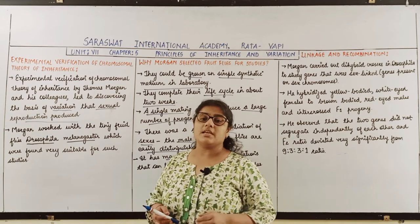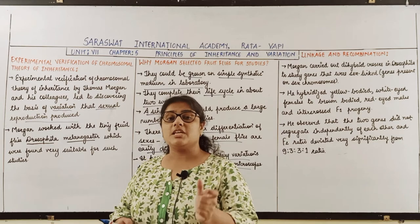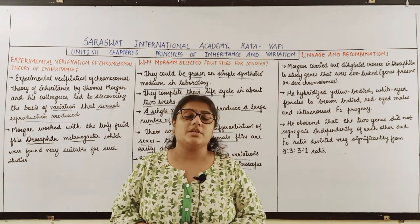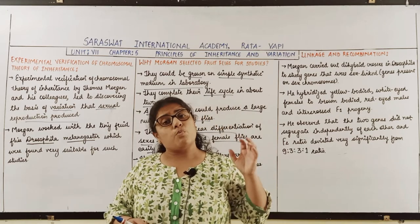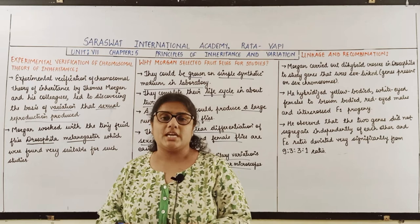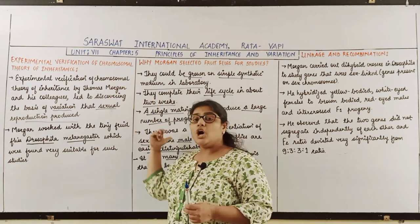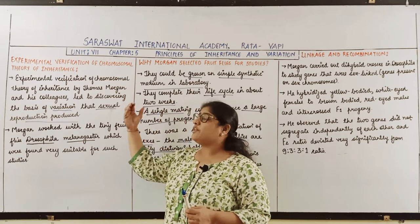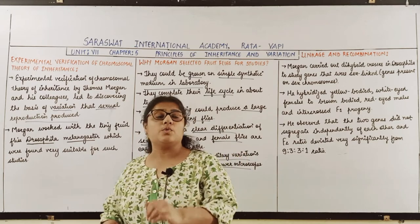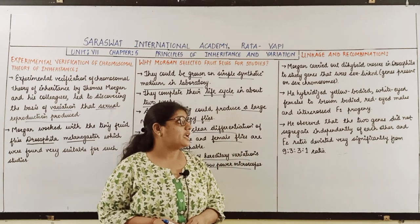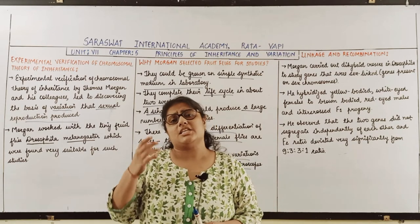When Morgan experimented to verify the chromosomal theory of inheritance, it led to the discovery of what was the basis of variations occurring during sexual reproduction. The reason they found was linkage and recombination.